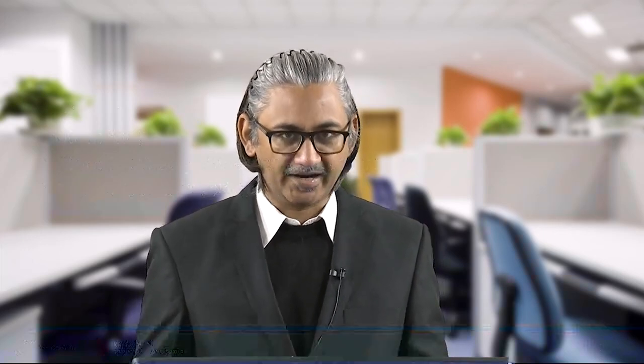The microstructural features which are important during the hot deformation process — which we try to change through hot deformation — are basically grain size. The main purpose is to refine the grain size, because as you know the Hall-Petch relationship: with refinement in grain size you get more strength.